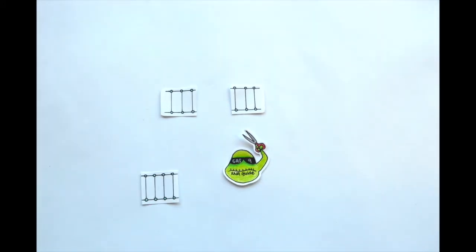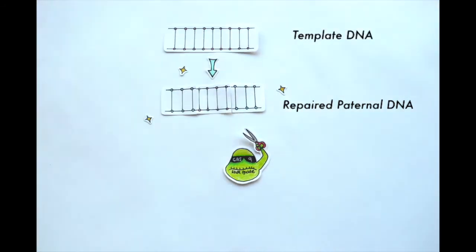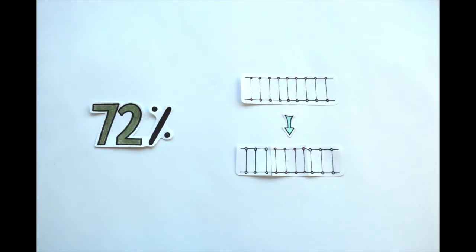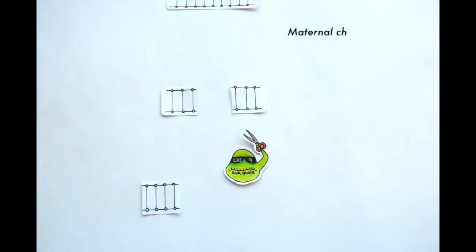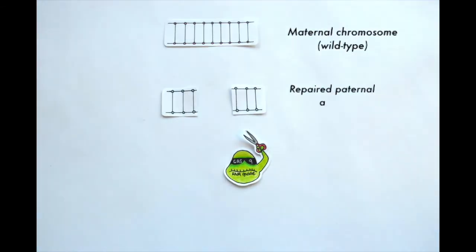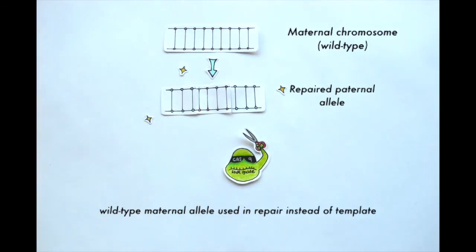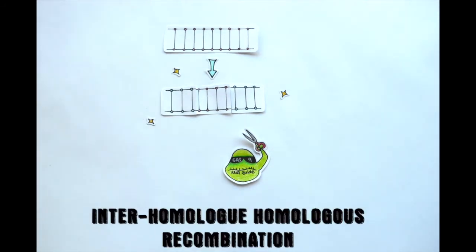Surprisingly, when analyzing their PCR results, the researchers found that 72 percent of the embryos had a wild-type copy of the gene of interest instead of the template DNA as expected. They argue that this is due to the cell using the wild-type maternal allele to correct the break in the paternal chromosome instead of the repair template. This process is known as inter-homolog homologous recombination.